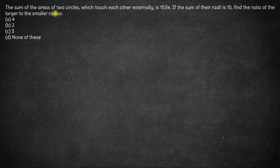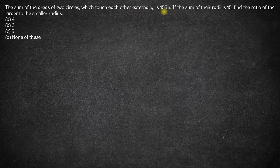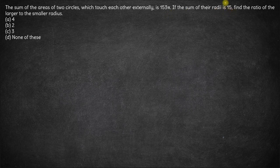Hi, here we have the sum of the areas of two circles which touch each other externally is 153π. If the sum of their radii is 15, find the ratio of larger to the smaller radius.